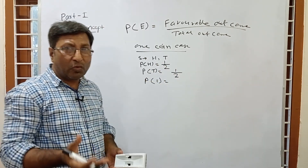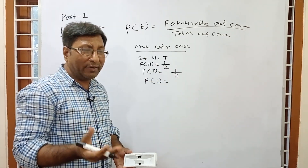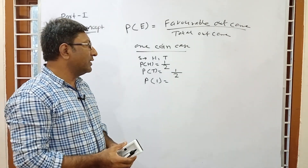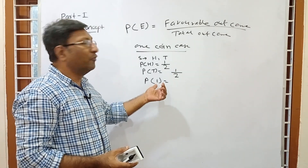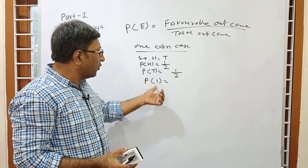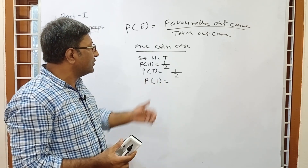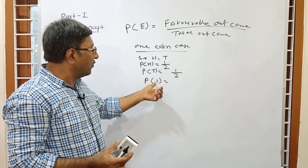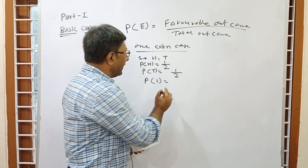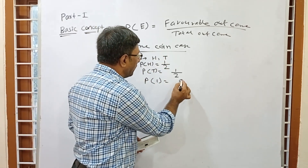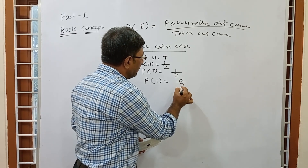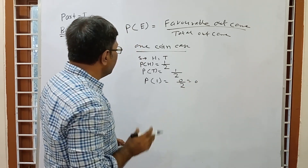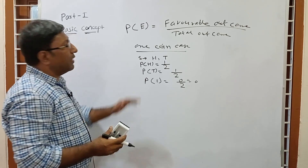Now if the question asks: what is the probability of the number 1? If we throw a coin, the coin has only 2 sides — head and tail — so there is no number 1. The number 1 is not in our sample space, so its count is 0. Our probability will be 0/2 = 0.